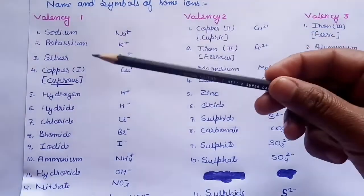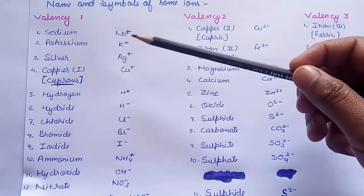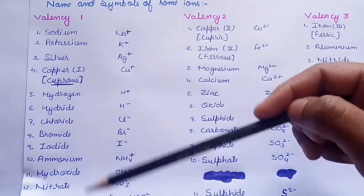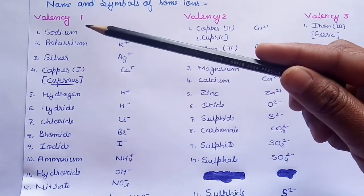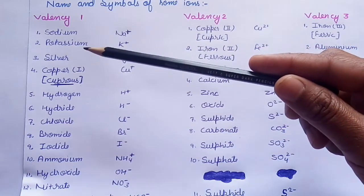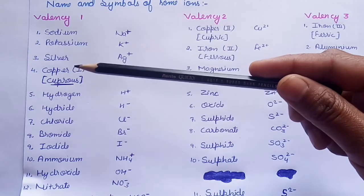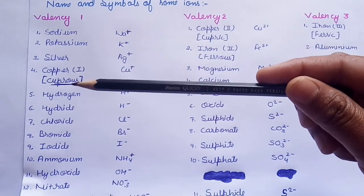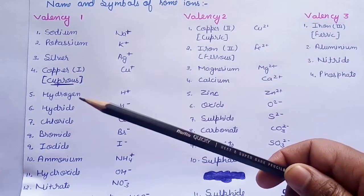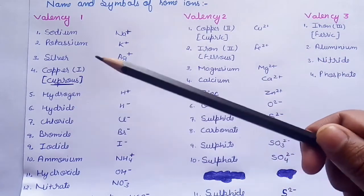Look, sodium is any positive, it's having valency 1. All these ions, they are having valency 1. Potassium, silver, copper. Copper in its first valency, it's known as cuprous. Then, hydrogen, hydride.